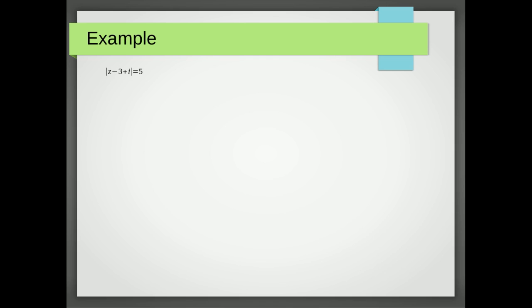This type of question is when we're saying the difference between Z and some point equals some other value. The problem is it's not directly clear what that point is here because we need to make Z minus that point. Let me show you what I mean.